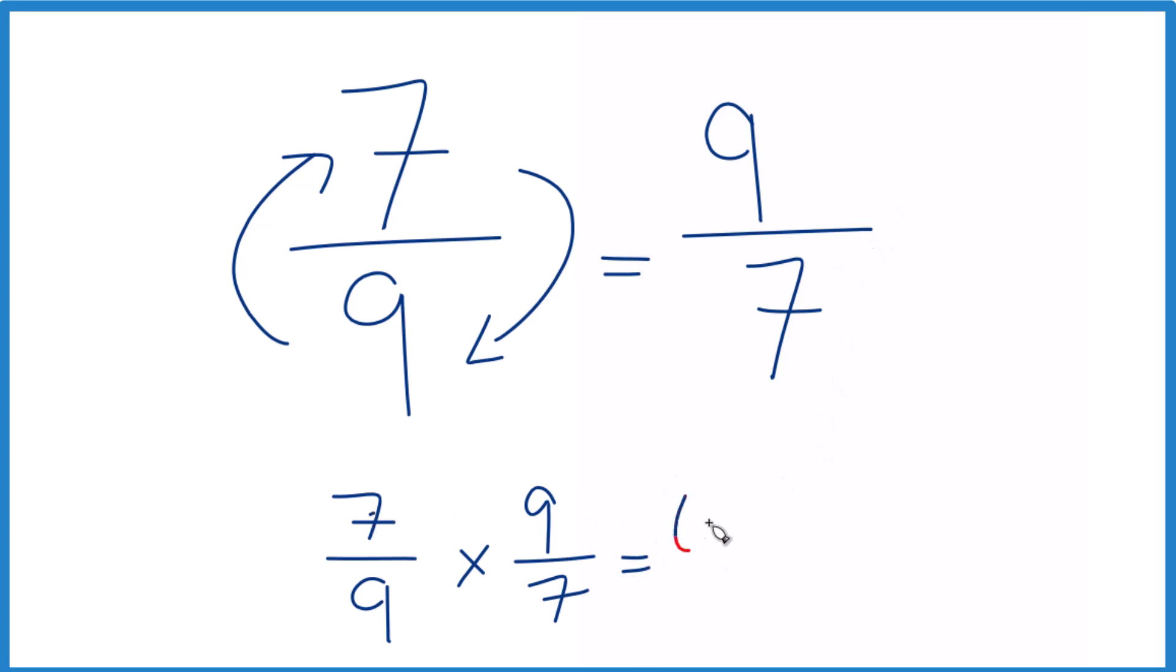Seven times nine, sixty-three, nine times seven, sixty-three, and sixty-three divided by sixty-three, that is one. So we did the top part correctly.